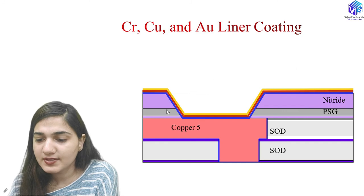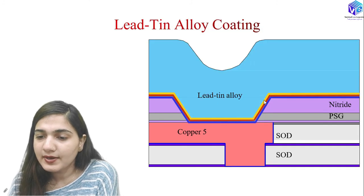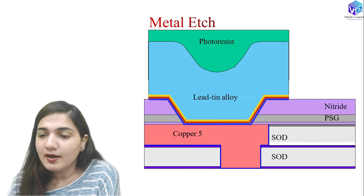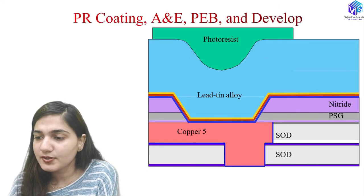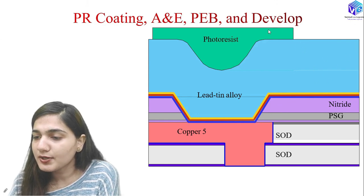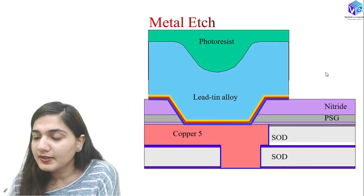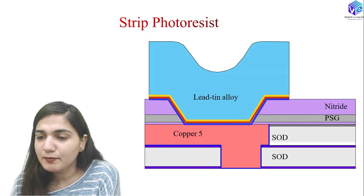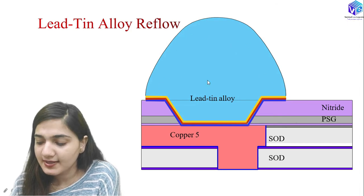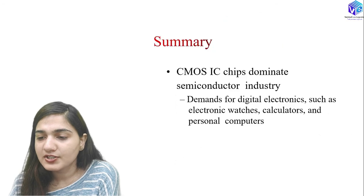After stripping the polyamide, argon sputtering etching is done, followed by CrCu and Au liner coatings. A lead-tin alloy coating is applied, then photoresist coating, alignment, exposure, PEB, and development form a mask. The undesired lead-tin alloy is etched away using a metal etch, the photoresist is removed, and finally the lead-tin alloy reflow gives a smoother final structure.